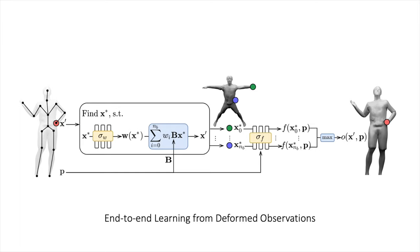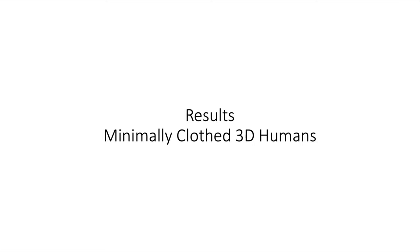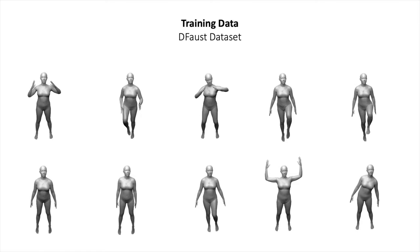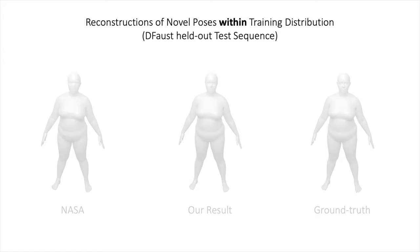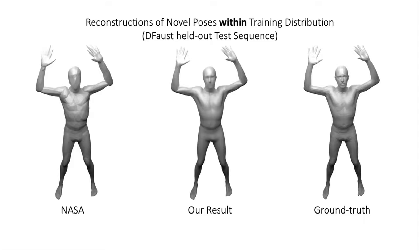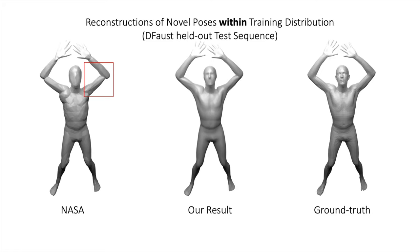We now show results on minimally clothed 3D humans. We use 9 out of 10 sequences from the default dataset for training and evaluate on the remaining one. We first compare the results of our method to the results of NASA on unseen poses from the training distribution. While both methods are able to reconstruct the overall shape well, NASA struggles at joints as it doesn't learn skinning weights. In contrast, our method is able to reconstruct the entire shape well.